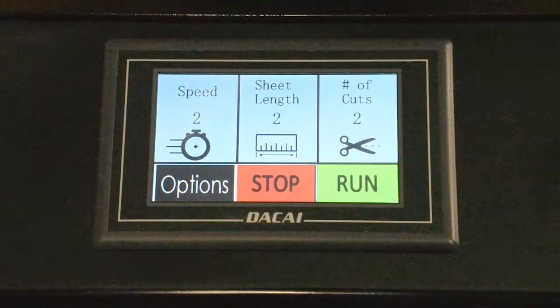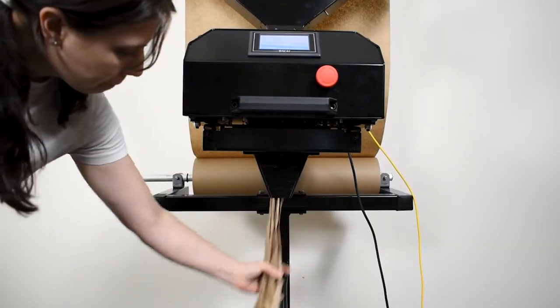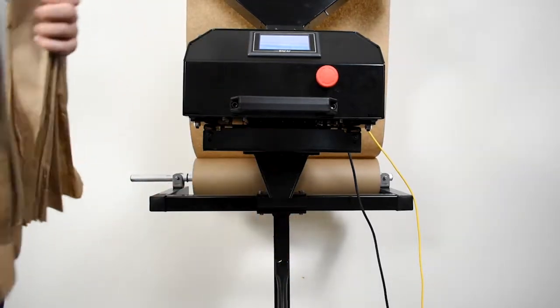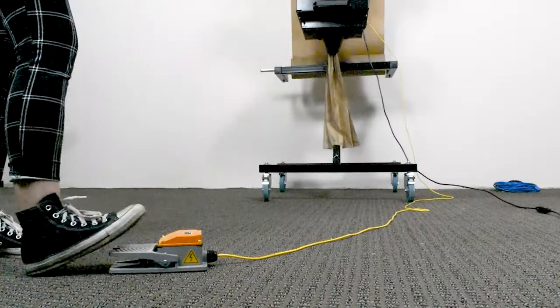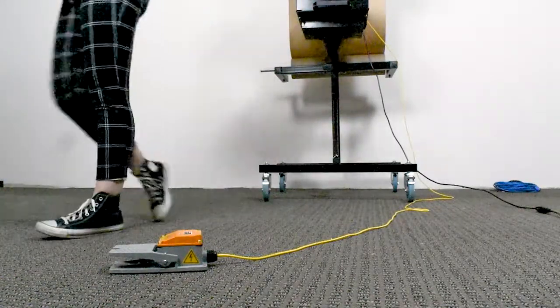Once each category is set, hit the green button. An alternative option is to hold down the foot pedal and let the paper dispense to a desired length. Then release the foot pedal so the machine can cut the paper.